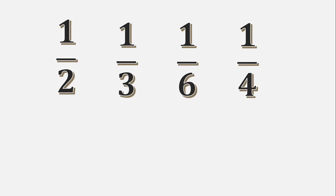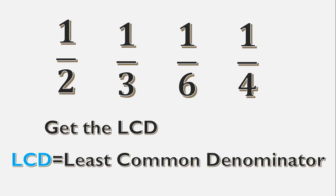First, get the LCD. LCD is the least common denominator. The denominators are 2, 3, 6, and 4.